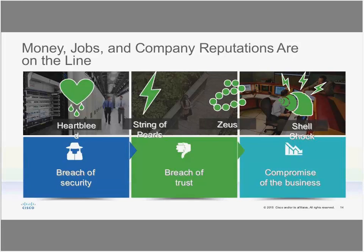String of Pearls looked specifically for password information in industries that had a lot of money, such as banking. Zeus really hit the jackpot in targeting the banking industry. Zeus is a Trojan, also accomplished through phishing — sending hoax emails and trying to get people to download malware. It is actually a botnet that was automatically downloaded just by opening the email, and millions of dollars were robbed through this particular threat.